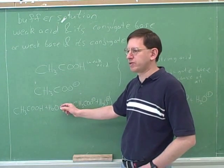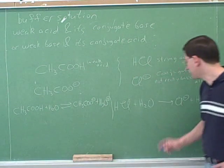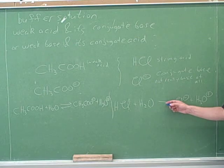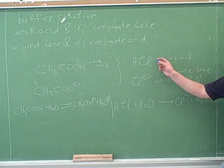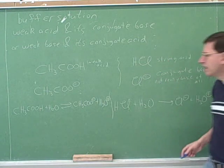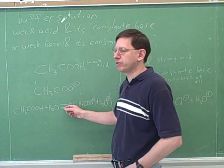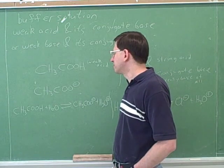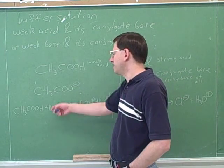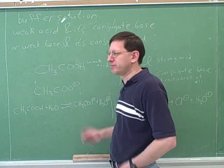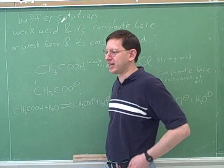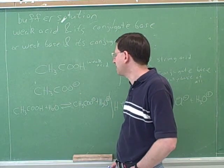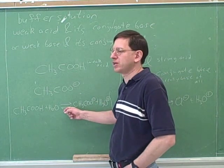Here we should really use an equilibrium arrow. For the strong acid reaction, I used a one-way arrow showing the reaction going to completion. But for this reaction, I should use an equilibrium arrow. If I were being precise, I'd show which side the equilibrium lies on, but the key thing is that there's an equilibrium.